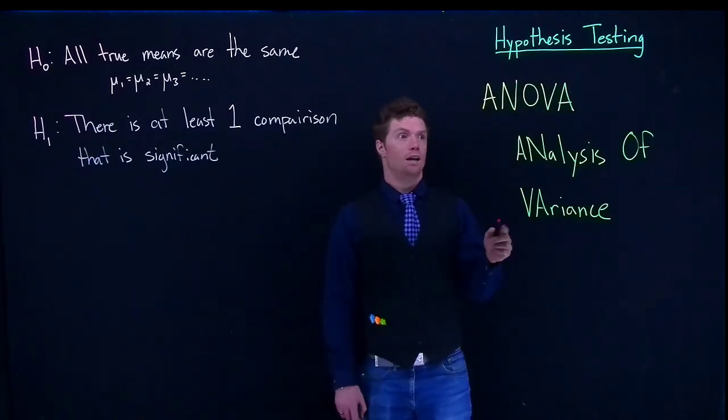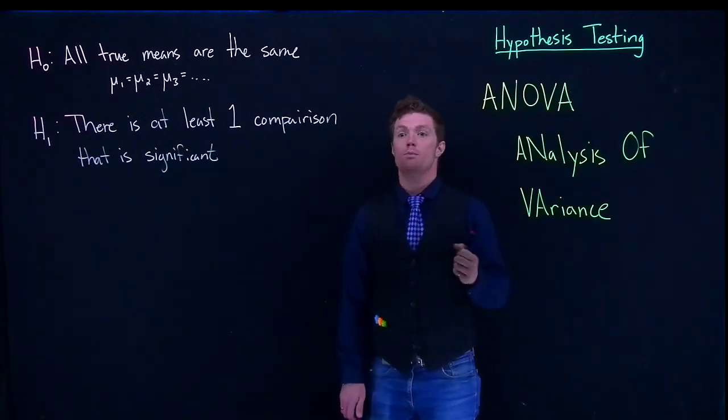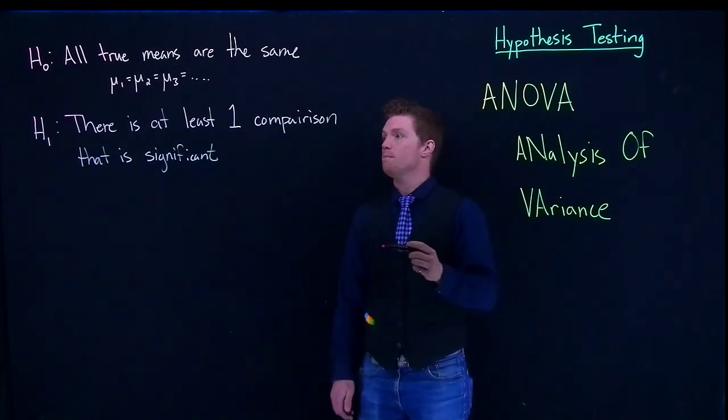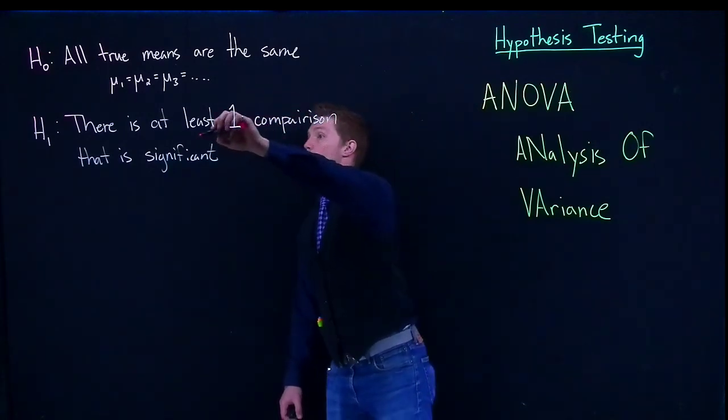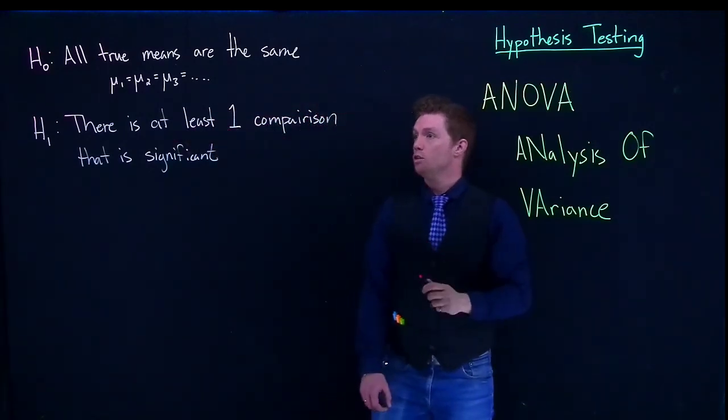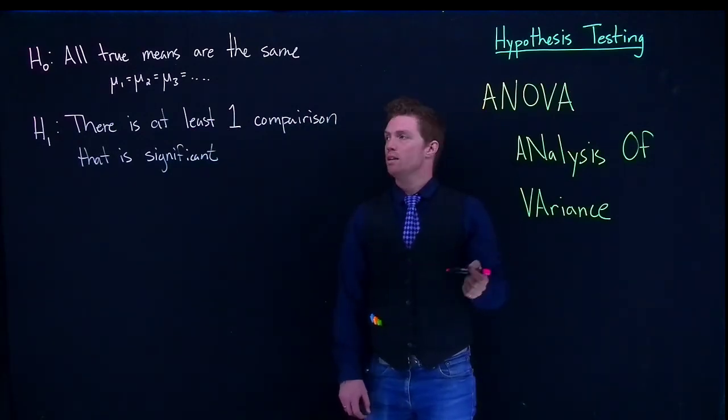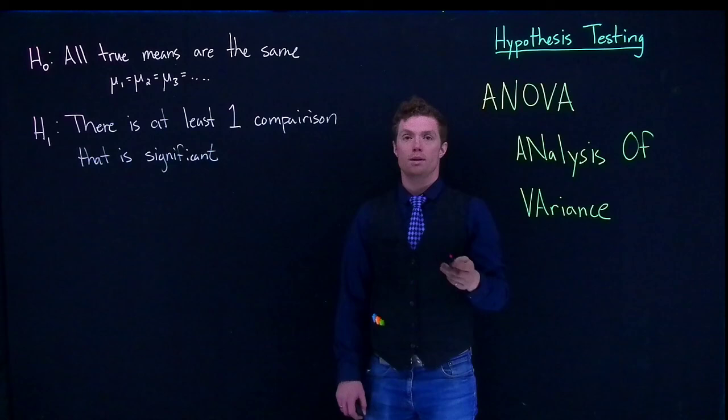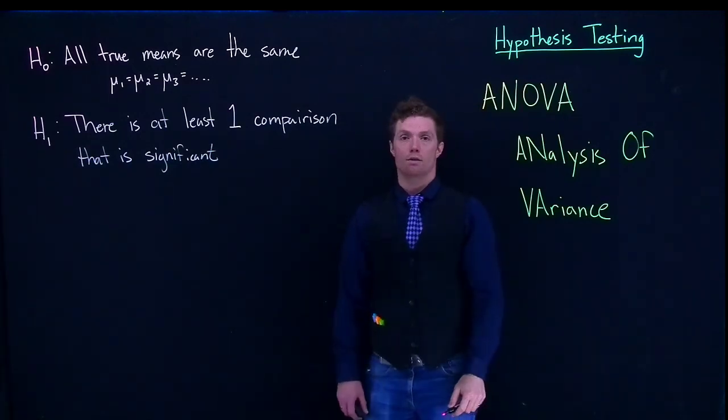So this is the baseline of what our ANOVA testing is. It allows us to test multiple means together at the same time, and we will find significant results if there's at least one significant comparison. We'll dive into some of the requirements and assumptions that are necessary for us to run our ANOVA test.